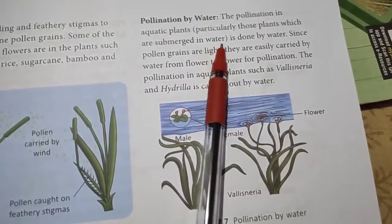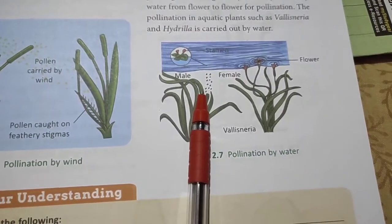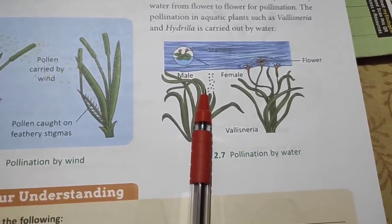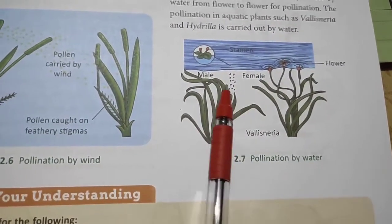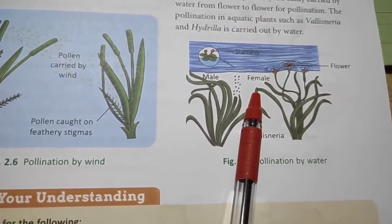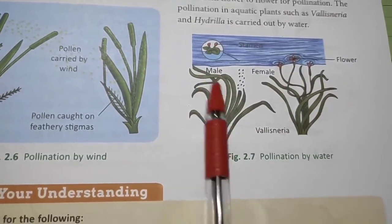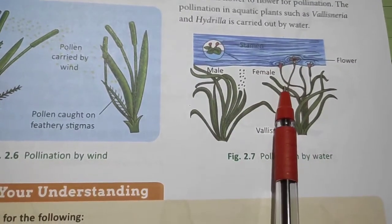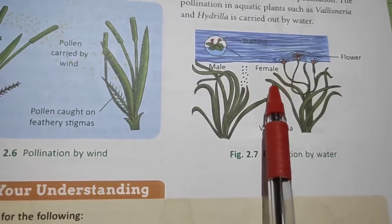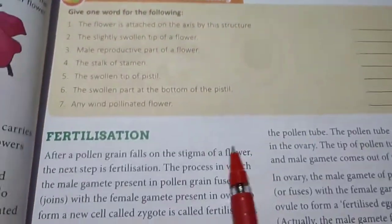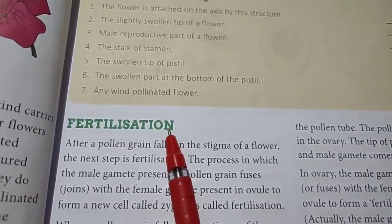Pollination by water — the pollination in aquatic plants is done by water. Since pollen grains are light, they are easily carried by water from flower to flower for pollination. Aquatic plants like Vallisneria and Hydrilla are pollinated by water. In the next video we will study fertilization. Take care. Goodbye.